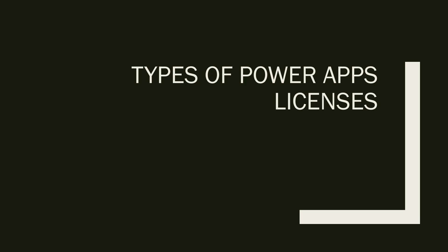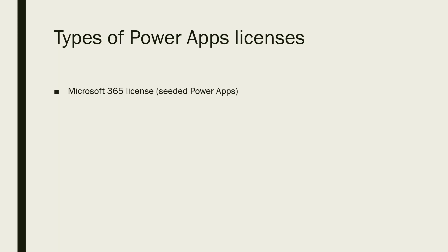Let's start with the types of PowerApps licenses. First, we have the Microsoft 365 license. If you join an organization as a Microsoft 365 developer, engineer, or support person, your organization will provide you a basic Office 365 E3 or E5 license. That license includes Power Platform seeded or inbuilt, but with limited capabilities — no premium connectors or premium features. But if you need to build an app that doesn't need any premium feature, this option is good for you.